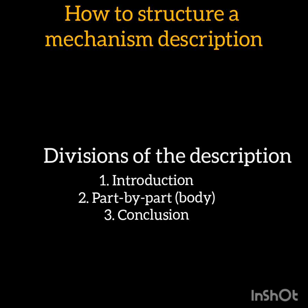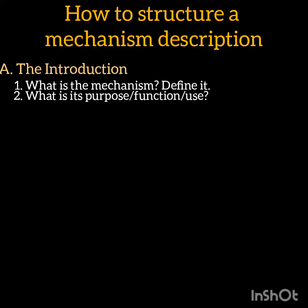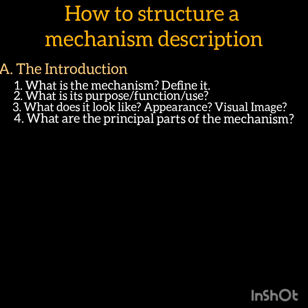You have the introduction, the part-by-part description, and the conclusion. In the introduction, the reader needs to know three kinds of information: first, what is the mechanism — define it; second, what is its purpose, that is the function or use of the mechanism; and third, what does it look like — the appearance of the mechanism. You should provide a picture or a drawing of the mechanism. The last item in the introduction is to give the principal parts of the mechanism in the order in which you are going to discuss them, which gives organization to the discussion.